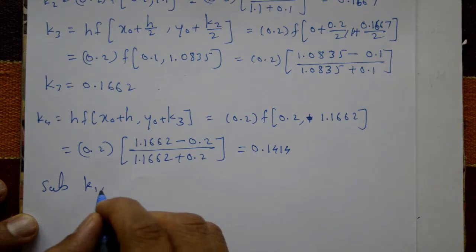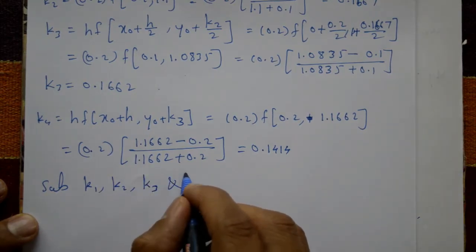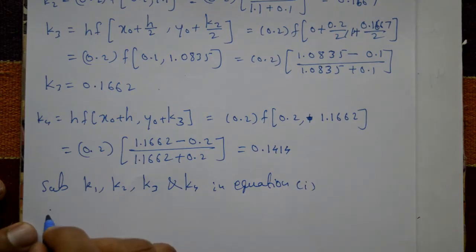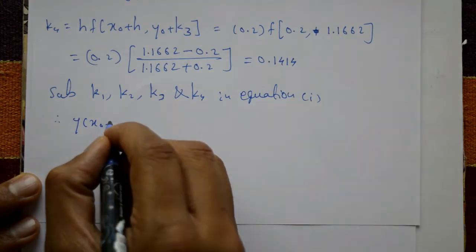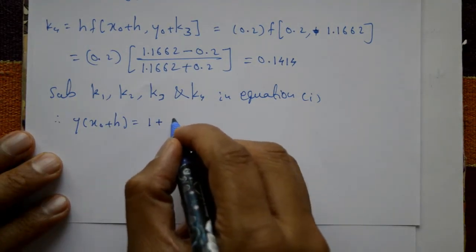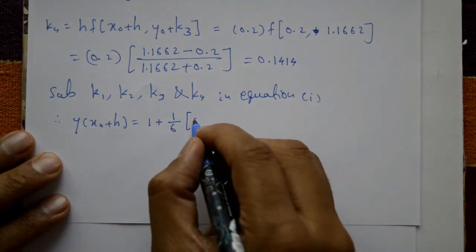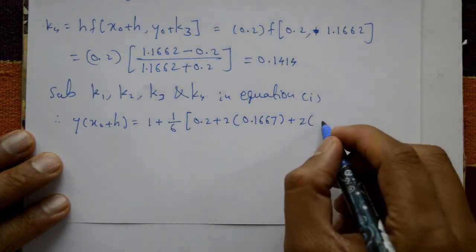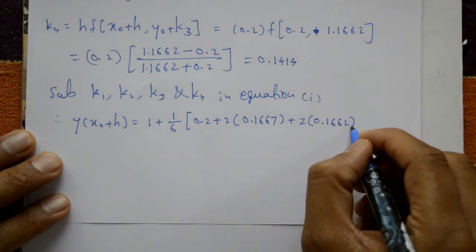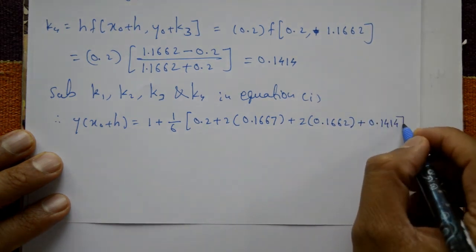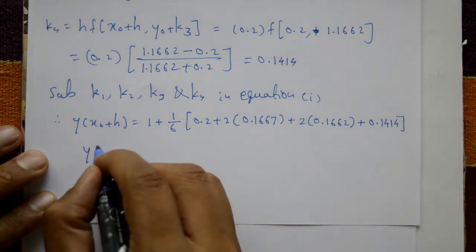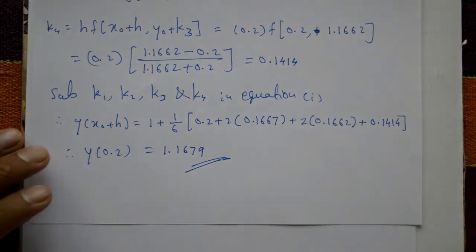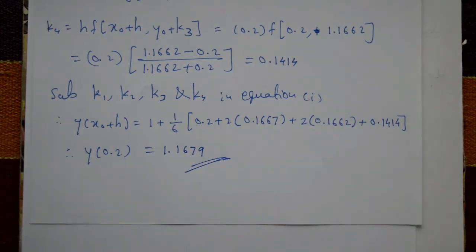Substituting k1, k2, k3, and k4 into equation number 1: y(x naught + h) equals y naught plus one-sixth times (k1 + 2k2 + 2k3 + k4), which is 1 plus one-sixth times (0.2 plus 2 times 0.1667 plus 2 times 0.1662 plus 0.1414). Since x naught is 0 and h is 0.2, therefore y(0.2) equals 1.1679. This is the required solution.